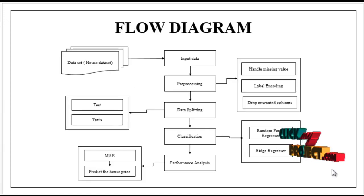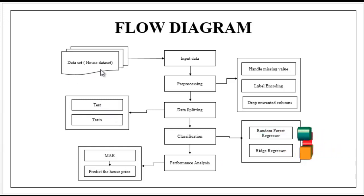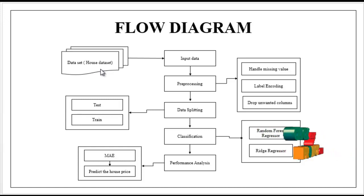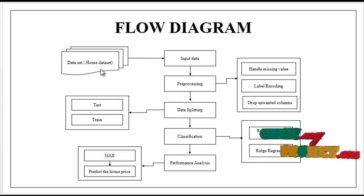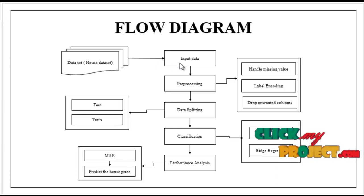Then we are going to see the flow of our process. First we have to select the dataset. The dataset name is house price dataset. The dataset was collected from dataset repositories like UCI, GitHub, and Kaggle. After that we have to read the selected input dataset by using the pandas package.